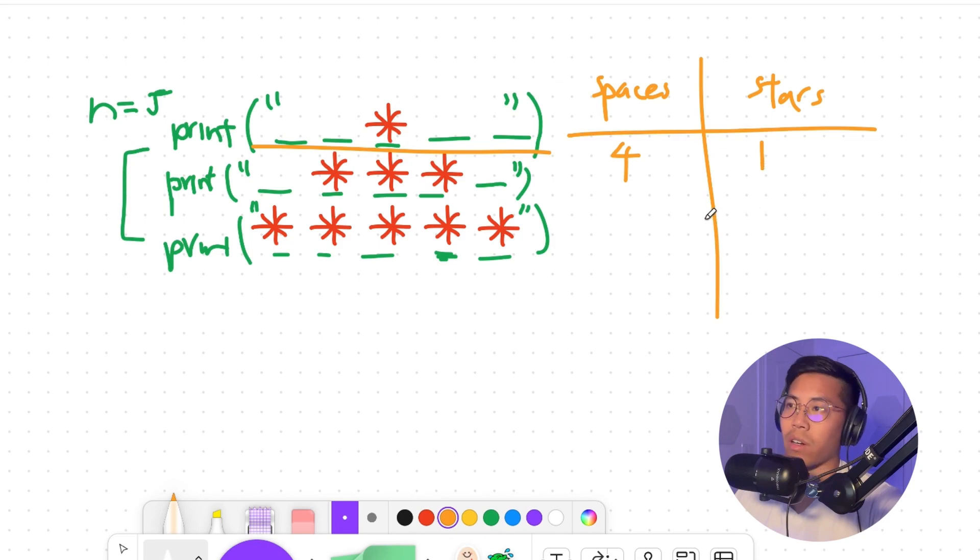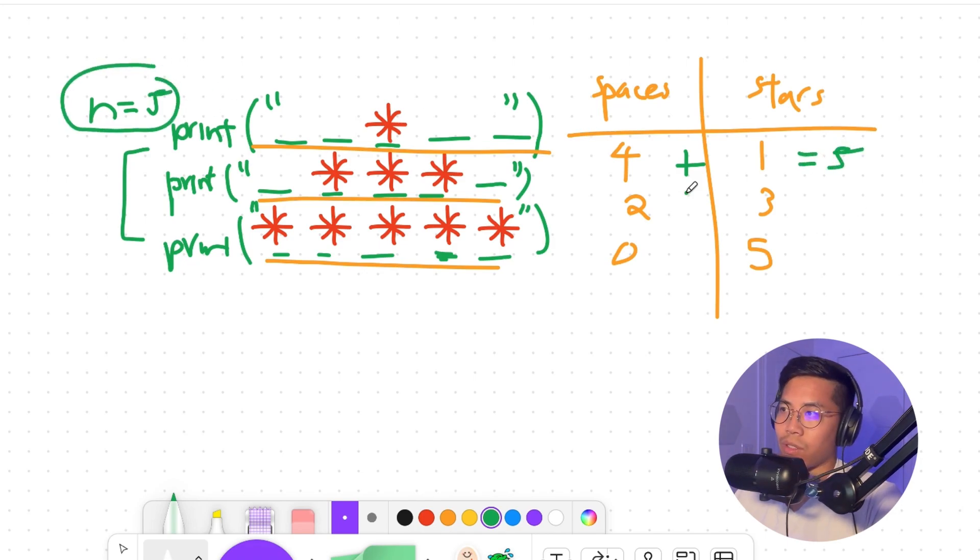In the second row, we have two spaces and three stars. And in the bottom row, we have zero spaces and five stars. So now that we have some numbers, we can do some basic math. You look here, four plus one will give us five. And five is basically the n value. Two plus three will also give us five. Zero plus five will also give us five.